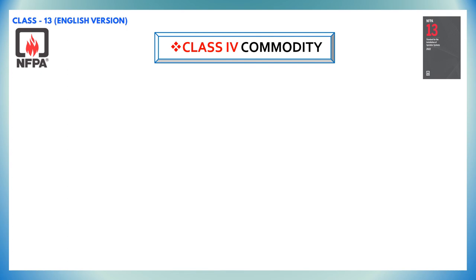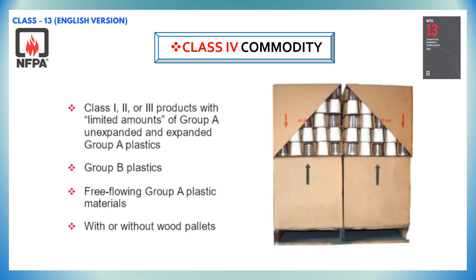Class 4 commodity classification is defined as a product that meets one of the following criteria: class 1, 2, or 3 products with limited amounts of group A unexpanded and expanded group A plastics. Also, if the products are constructed partially or totally of group B plastics, it will come under class 4 commodity. Apart from that, a product which consists of free-flowing group A plastic materials will also come under class 4 commodity classification.